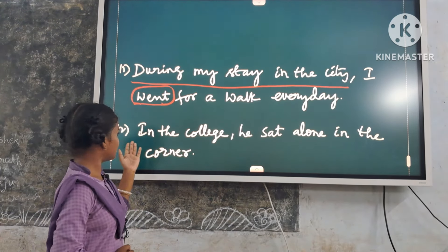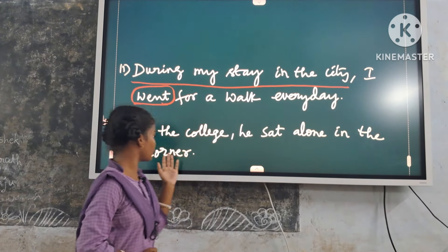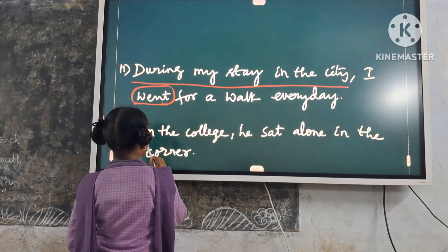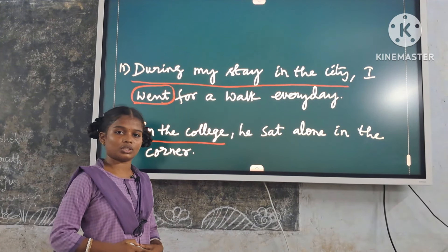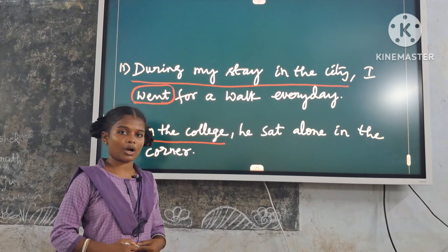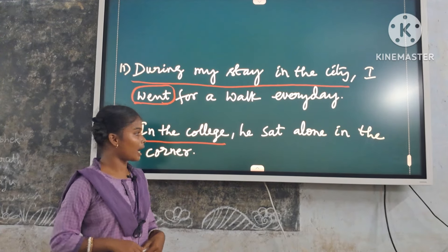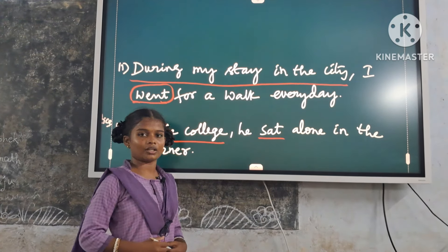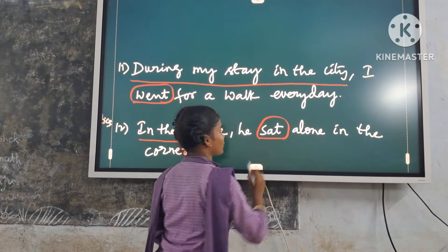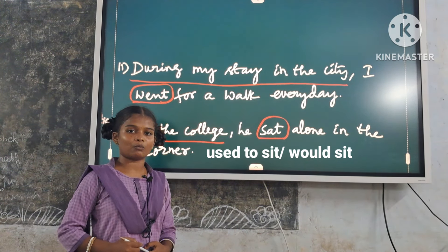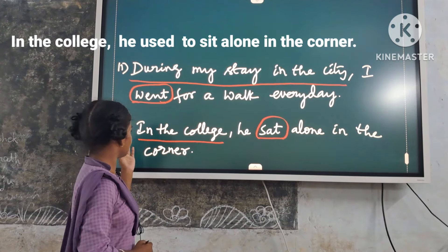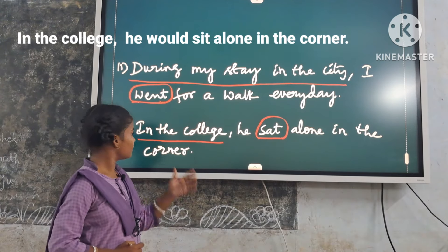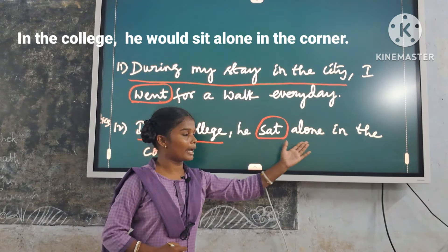Twelfth example: 'In the college, he sat alone in the corner.' Here, 'in the college' is a time expression. So we use both 'used to' and 'would'. Replace with 'used to sit' or 'would sit'. Answer: 'In the college, he used to sit alone in the corner.' Or: 'In the college, he would sit alone in the corner.'